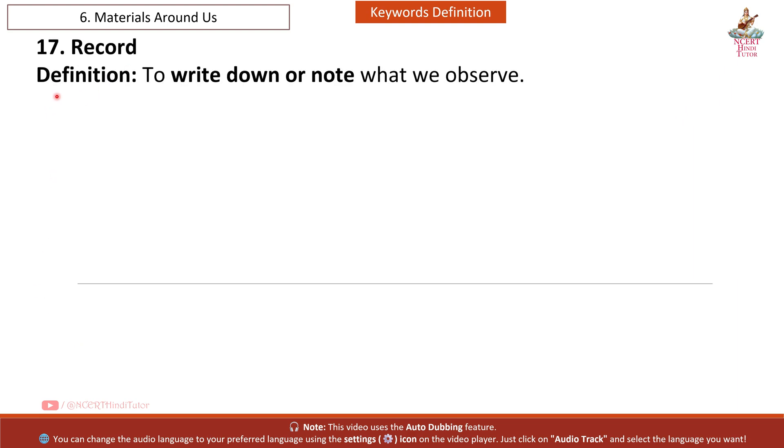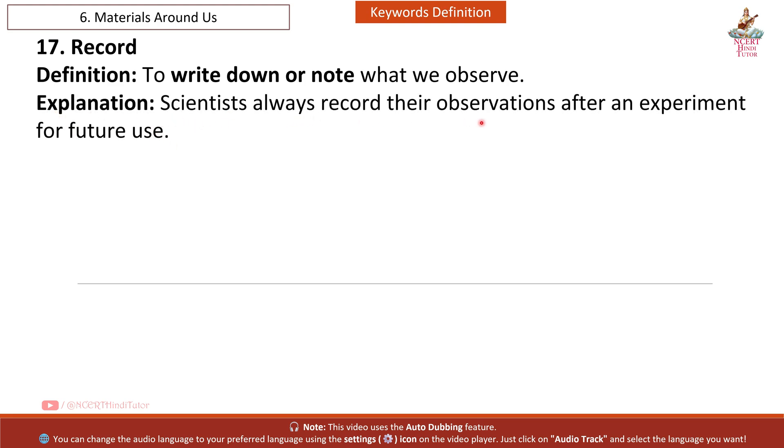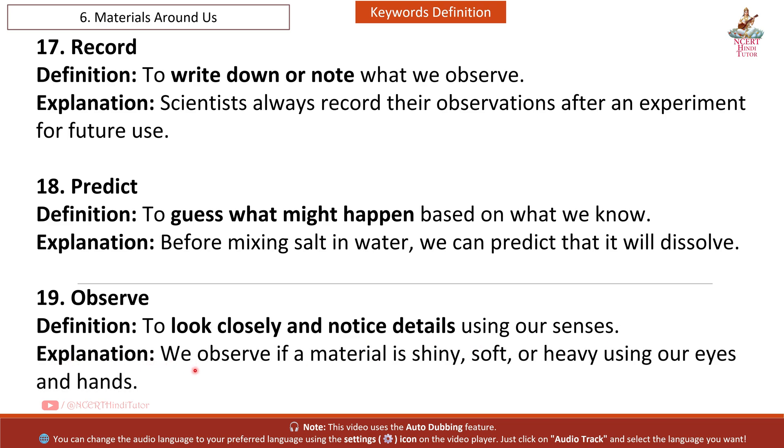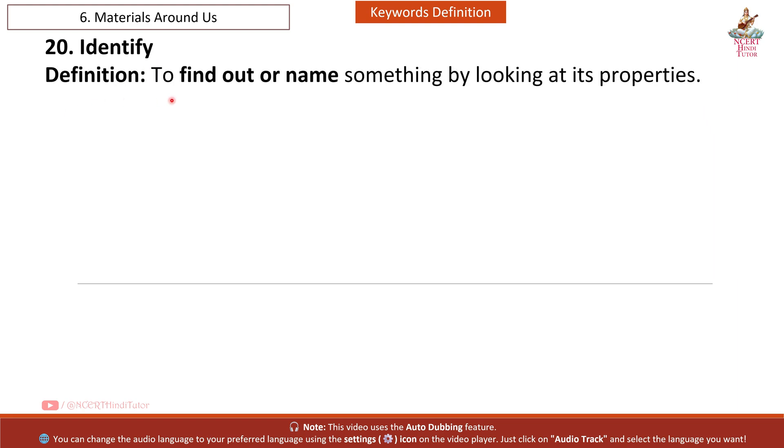Seventeen: Record. Definition: to write down or note what we observe. Explanation: scientists always record their observations after an experiment for future use. Eighteen: Predict. Definition: to guess what might happen based on what we know. Explanation: before mixing salt in water, we can predict that it will dissolve. Nineteen: Observe. Definition: to look closely and notice details using our senses. Explanation: we observe if a material is shiny, soft or heavy using our eyes and hands. Twenty: Identify. Definition: to find out or name something by looking at its properties. Explanation: we can identify a material as transparent by checking if we can see through it.